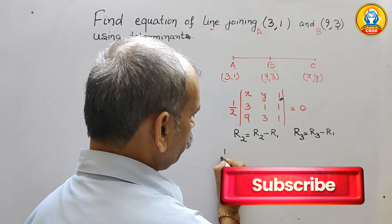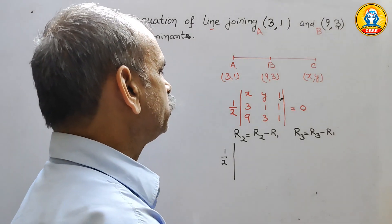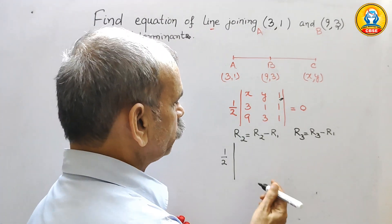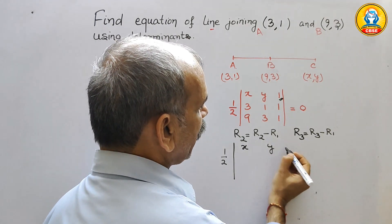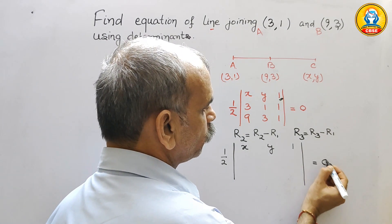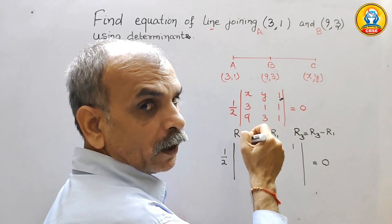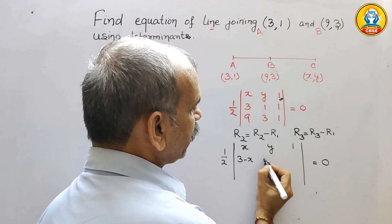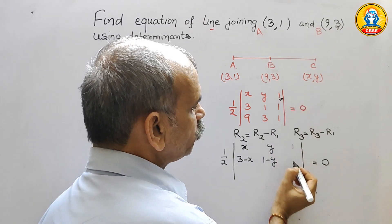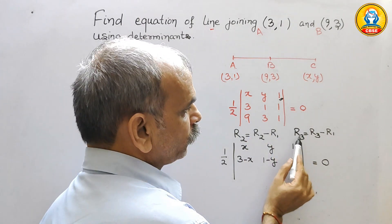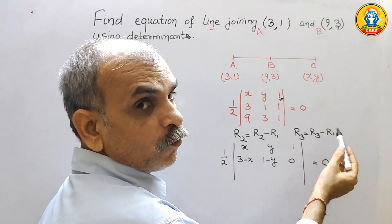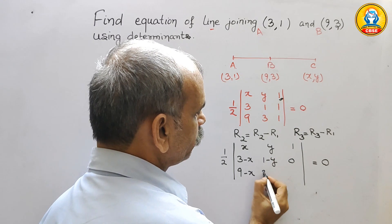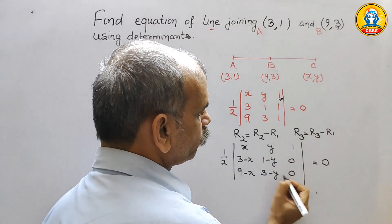So we will get half and this. So here you can see, ρ1 is the same, need not to change it. So here we will write x, y and 1. This is equal to 0. But ρ2 is ρ2 minus ρ1. So we can say, 3 minus x will come here. This will be 1 minus y and this will be 0. Now, comes in ρ3. Ρ3 is ρ3 minus ρ1. That means, 9 minus x, 3 minus y and 1 minus 1 is 0.